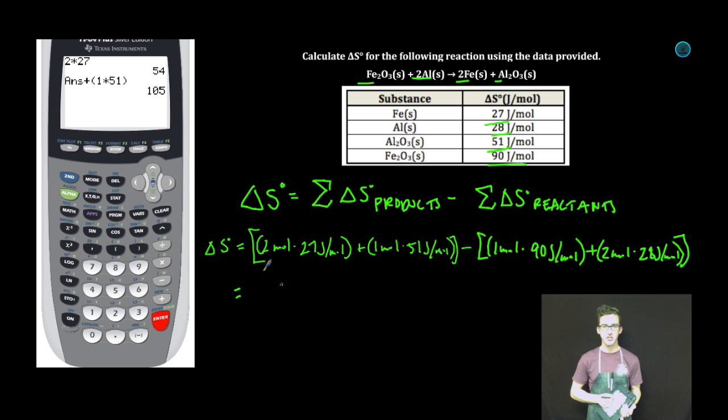Sum of the entropies of our products. 105 joules per mole. All right quick time out. Looks like I made an error here. These should all be joules per mole Kelvin. So one more time.